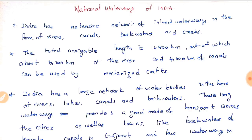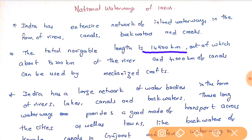The total navigable length identified by our government is 14,500 kilometers, out of which about 5,200 kilometers are river routes and the remaining 4,000 kilometers are canals. These can be used by mechanized crafts. If utilized properly, we will have very good use of our national waterways.